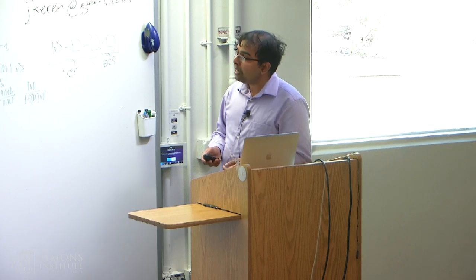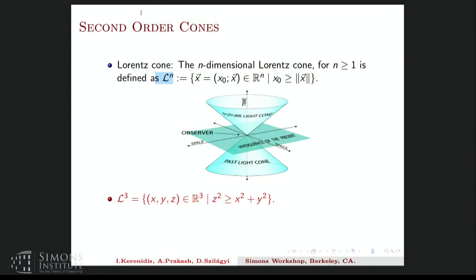So this is a picture of L_3, which is the set of all points x, y, z, so that z squared is bigger than x squared plus y squared. And also let's look at L_1, which is simply all the positive points now, which is simply R plus. So a second order cone program is an optimization problem where the constraints of the form vector x belongs to some Lorentz cone, L_n.